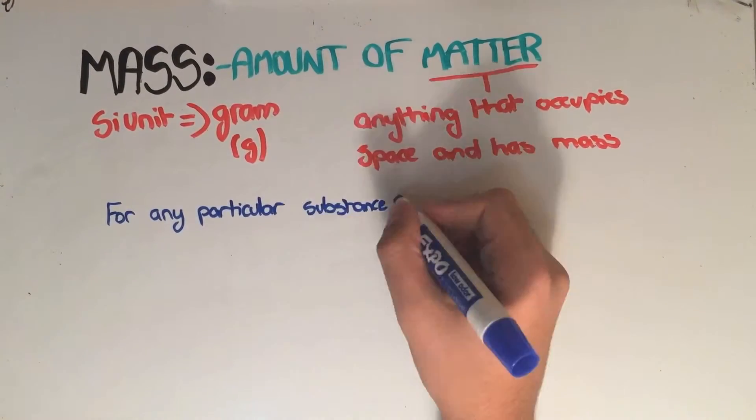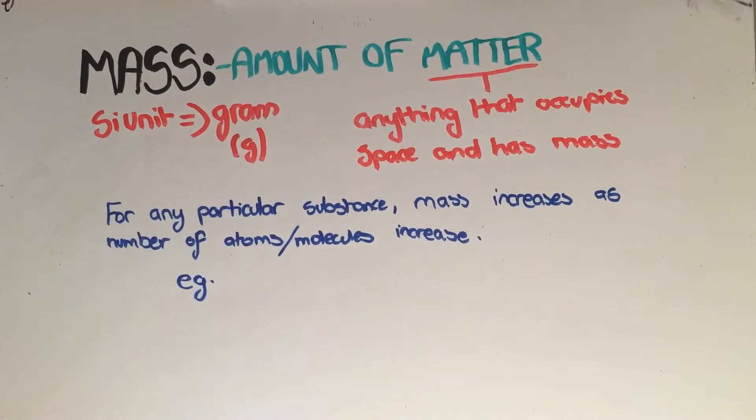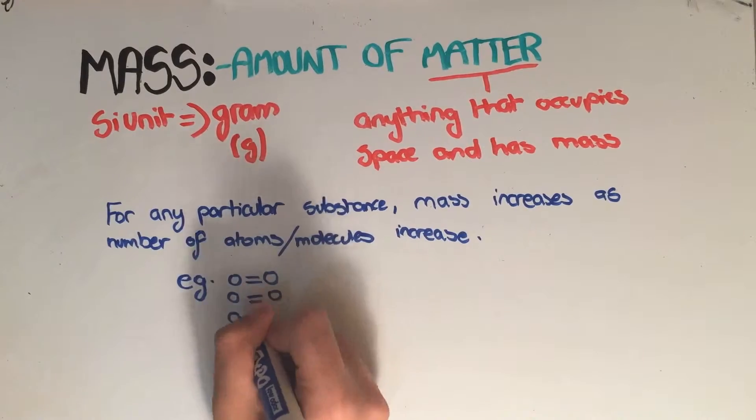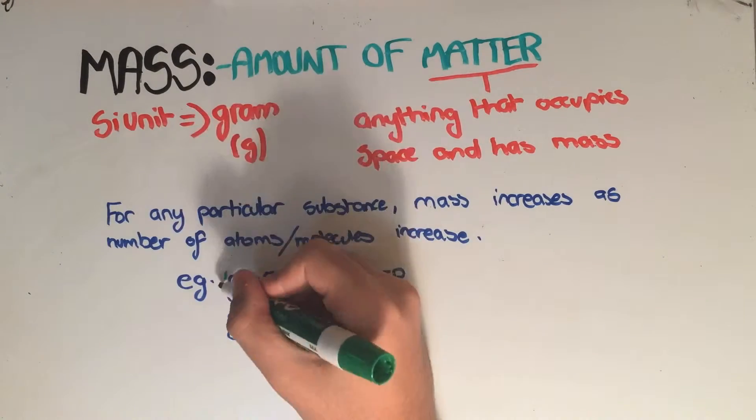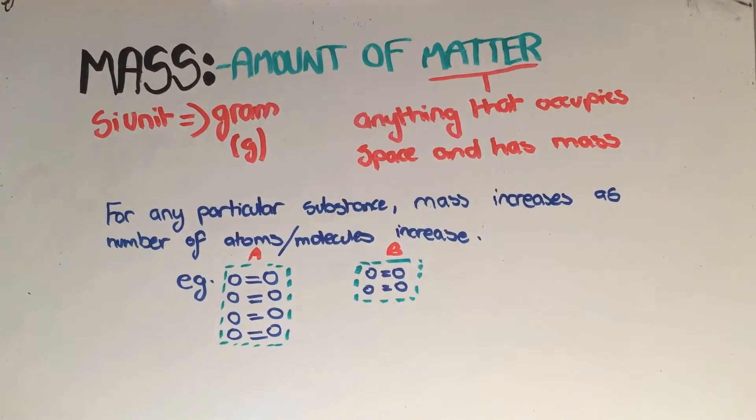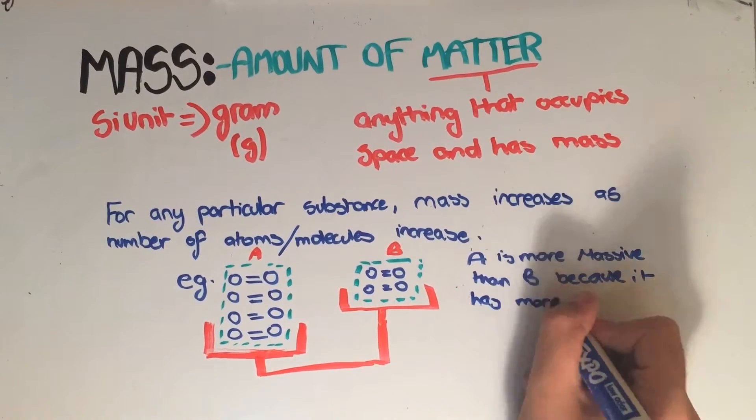For any specific substance, as the amount of molecules or atoms increases, the mass also increases. So if we have two structures, one with four oxygen molecules, which we can call structure A, and the other with two oxygen molecules, which we can call structure B, A is more massive than B because it has more oxygen atoms and molecules.